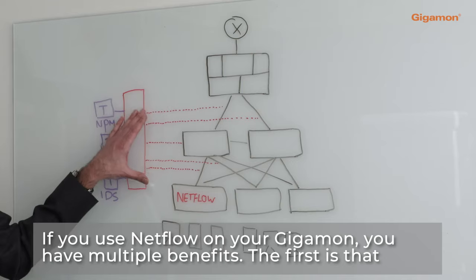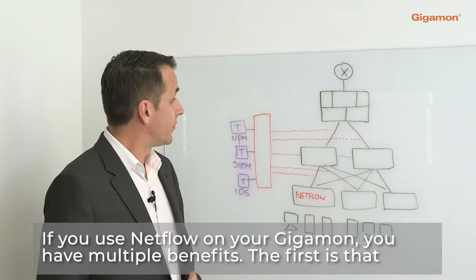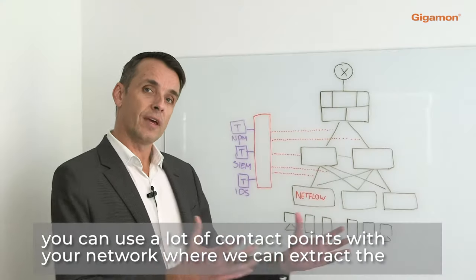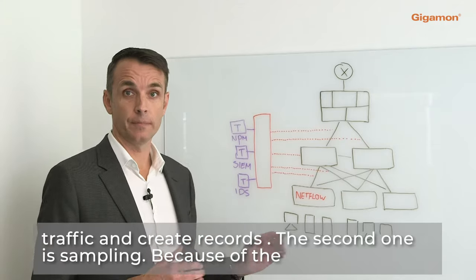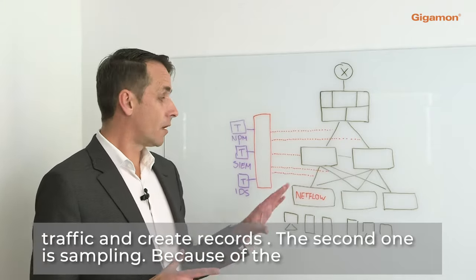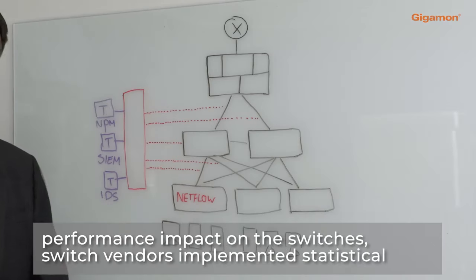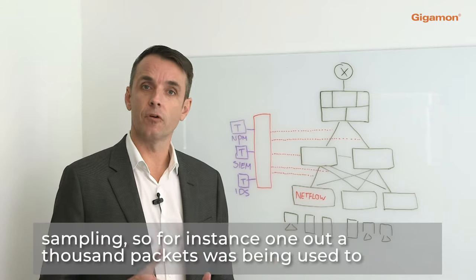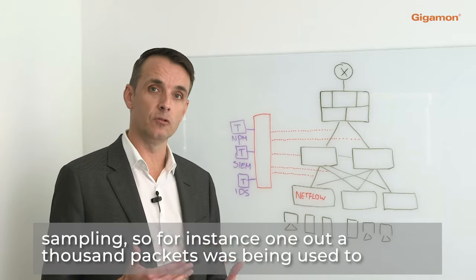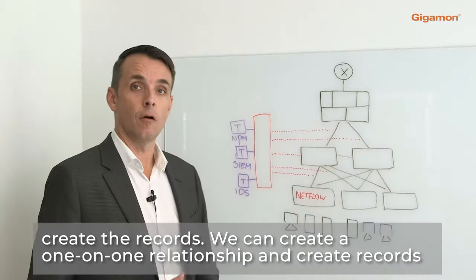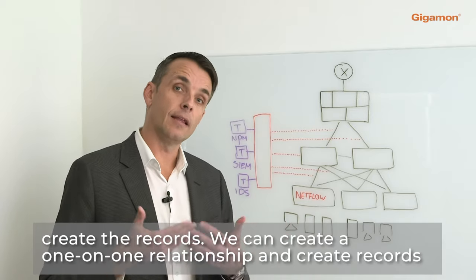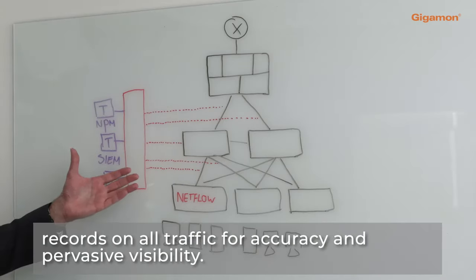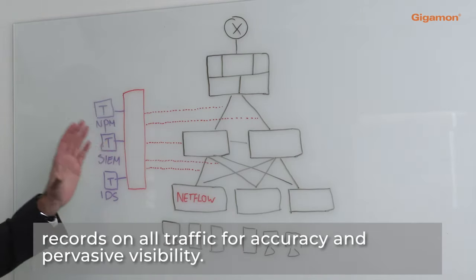If you use NetFlow on your Gigamon, you have multiple benefits. The first is that you can use a lot of contact points with your network, where we can extract the traffic and create records on. The second is sampling — because of the performance impact on switches, switch vendors implemented statistical sampling, so for instance one out of a thousand packets was being used to create records. Gigamon can create a one-on-one relationship and generate unsampled NetFlow records on all traffic for accuracy and pervasive visibility.